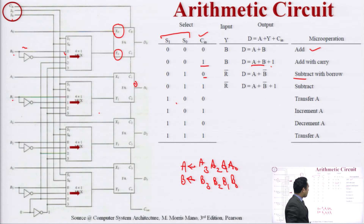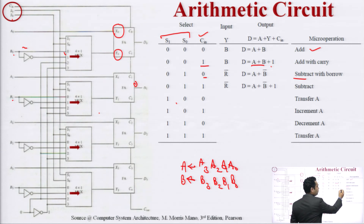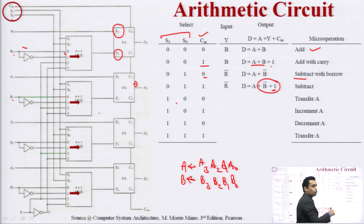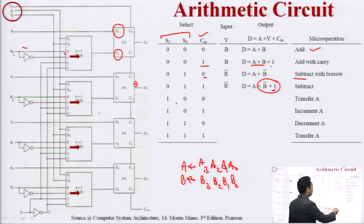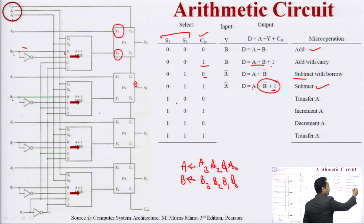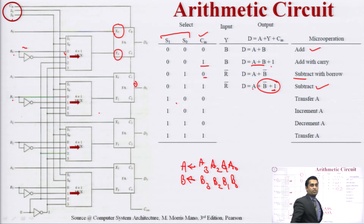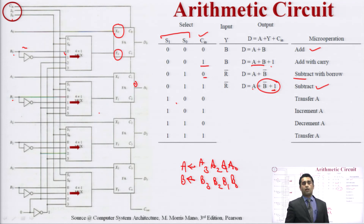In the next combination, carry-in is set to 1, so the 1 is added to the one's complement of B, making it the two's complement of B. When this two's complement of B is added with A, it performs a perfect subtraction. This is the 4th micro operation: SUBTRACT (A minus B using two's complement).